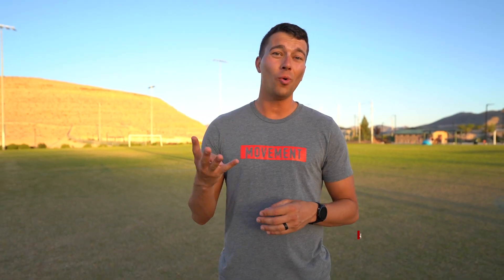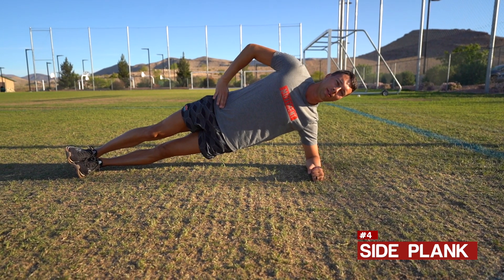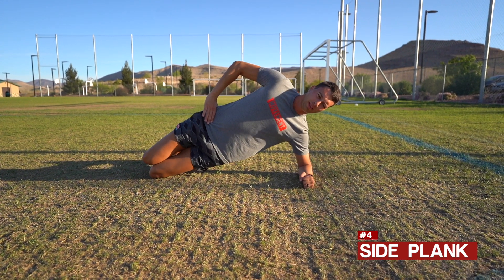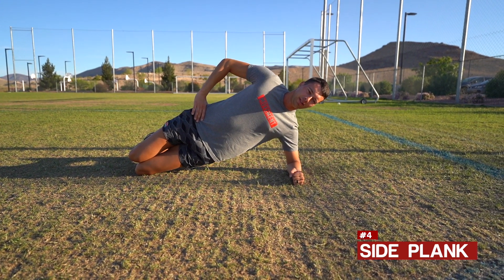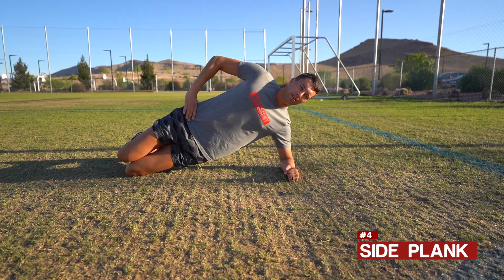Exercise number four is a side plank. This builds the capacity of your entire lateral chain — your obliques, the side of your hip, and the IT band's ability to handle load. Start on the knees if needed, but work up to a full side plank on the elbow with the feet. You can do this daily or every other day: three sets of 30 seconds each side. This is important for building stance phase mechanics and reducing lateral knee symptoms.